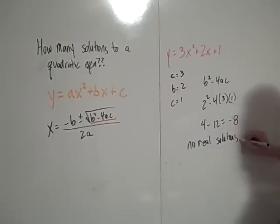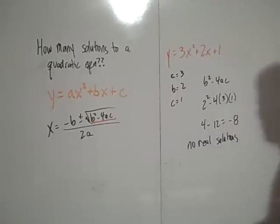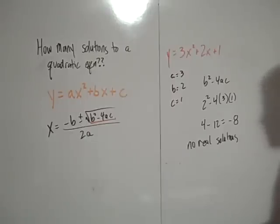If the discriminant is positive, there are 2 real solutions. And if the discriminant is equal to 0, there is 1 real solution.